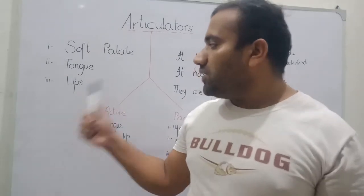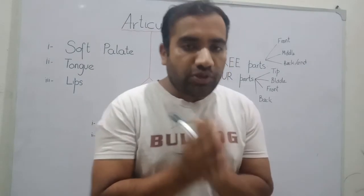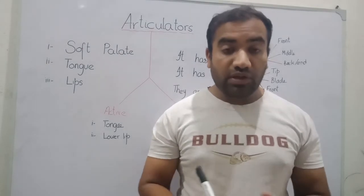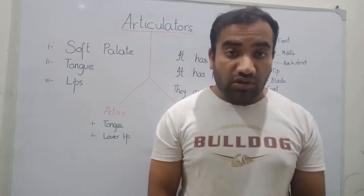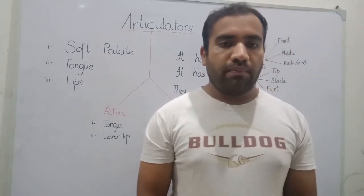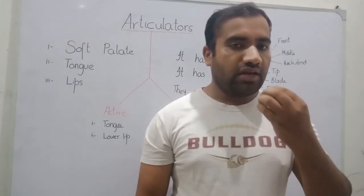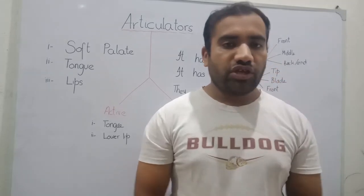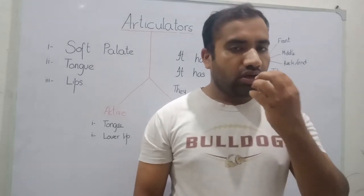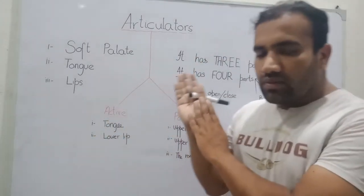The last articulator is the lips. The position of the lips can be of two types: one is when your lips are closed and produce a sound, and the other is when your lips are open and produce a sound. For example, when you say 'B' as in 'bat,' your lips compress the air and suddenly open. When you say 'U,' your lips are open and the air comes through without any obstruction. These are the articulators.